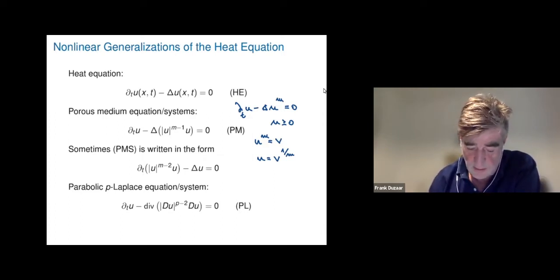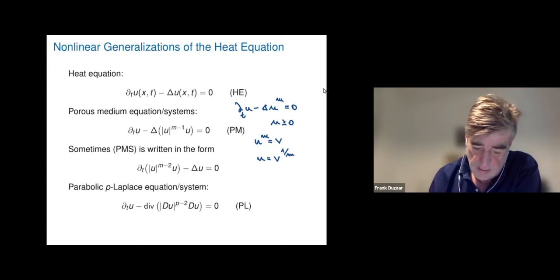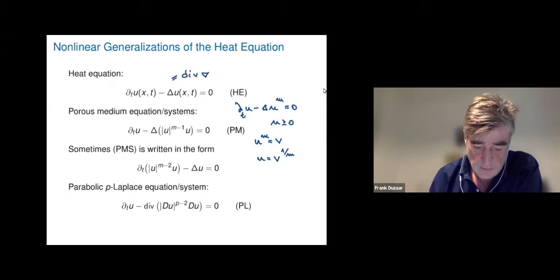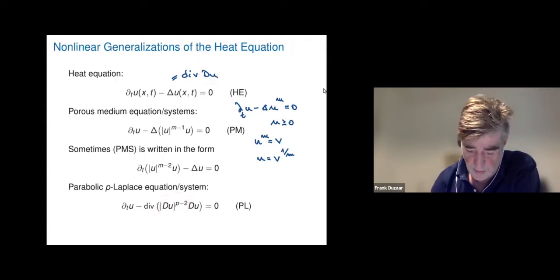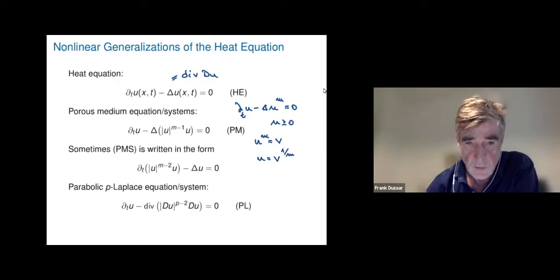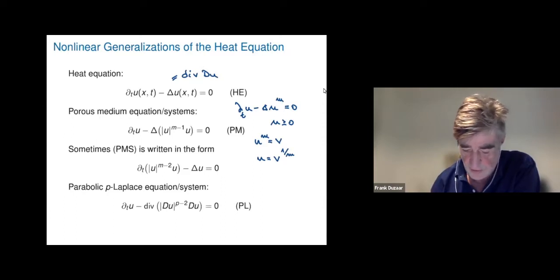The second way to generalize the heat equation is to write it as divergence of gradient of u, then place in front of du a factor |du|^(p−1). This is in a certain sense the L² gradient flow of the p-energy, and this gives the parabolic p-Laplace equation or system.